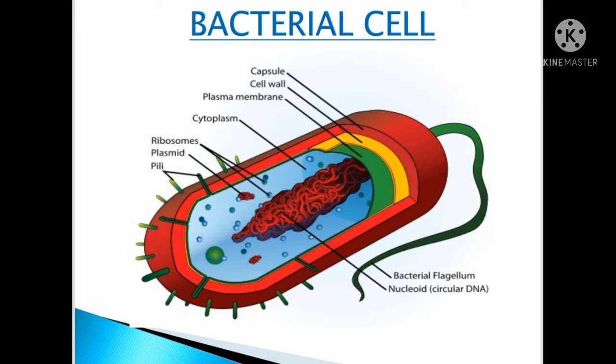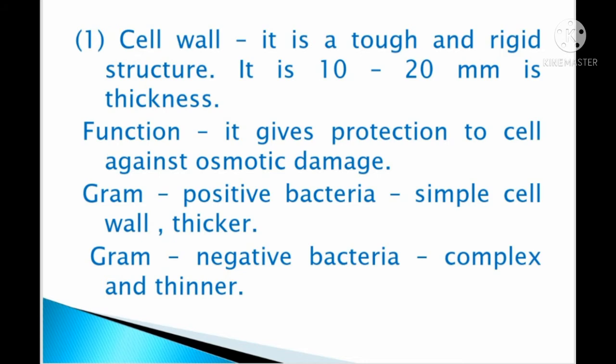The bacterial cell consists of pili, flagella, cell wall, capsule, plasma membrane, cytoplasm, and nucleoid. The first structure is the cell wall. It is a tough and rigid structure that is 10 to 20 nanometers in thickness. Its function is to give protection to the cell against osmotic damage.